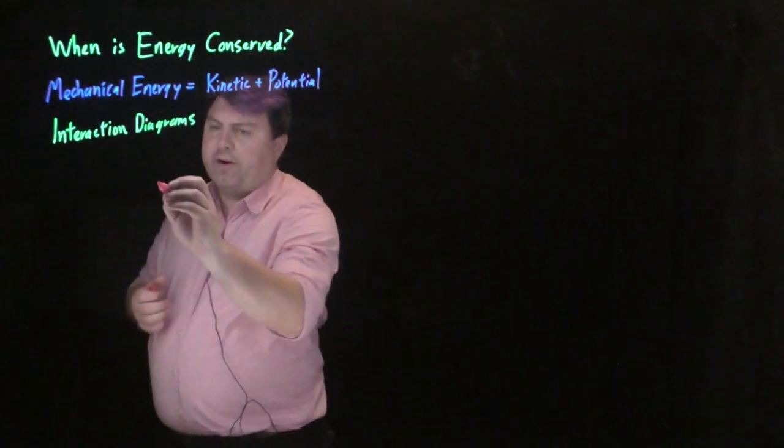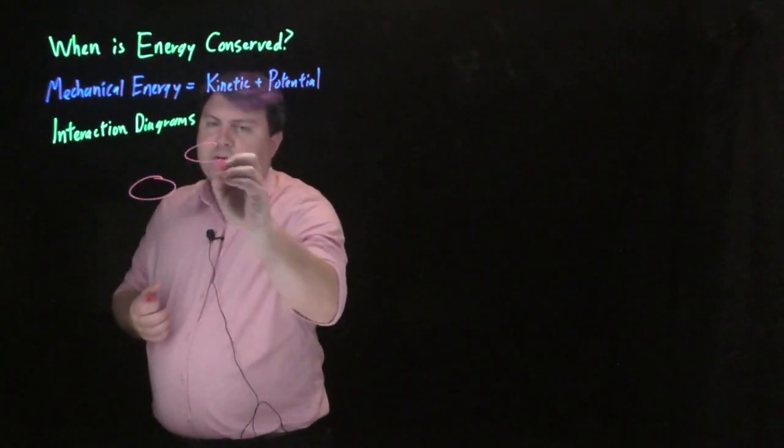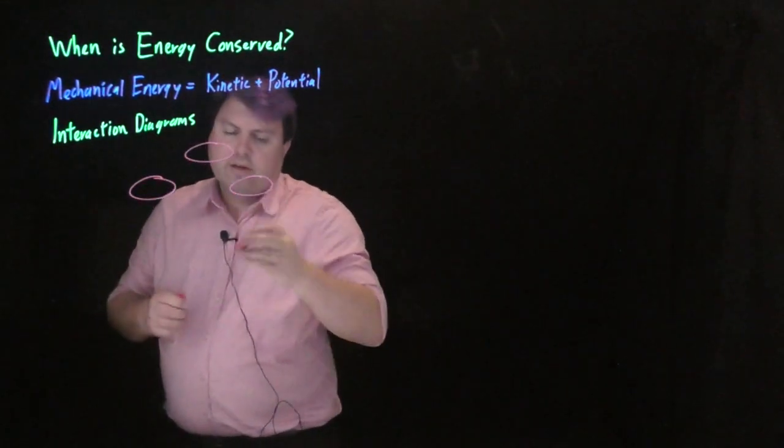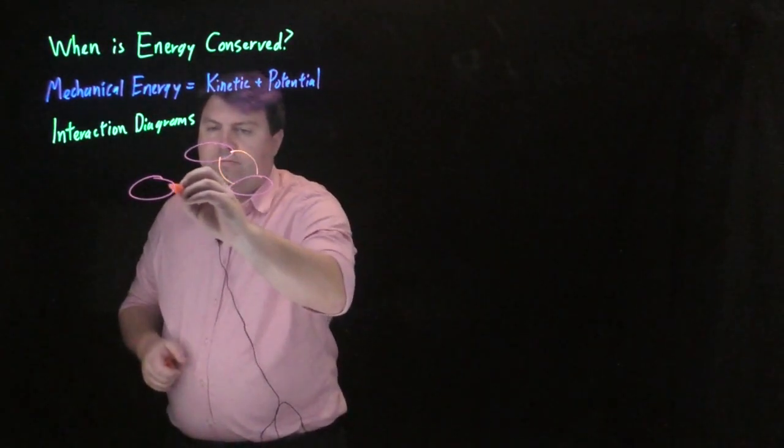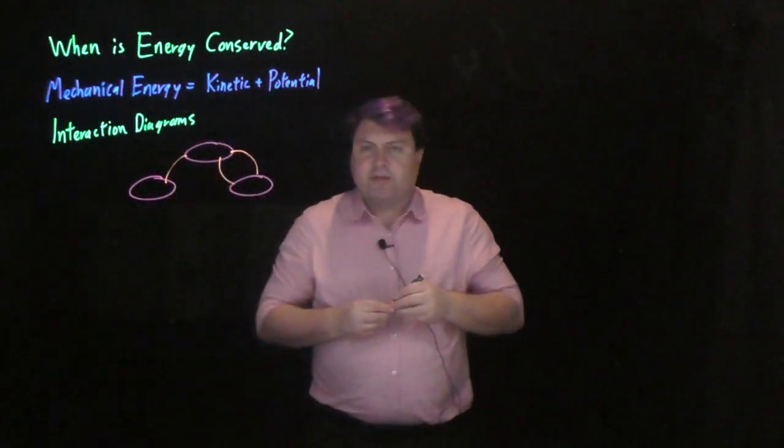Again, an example of our interaction diagram is we're going to have some number of objects, and we're going to have some number of interactions between them. Maybe something like this.